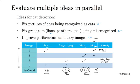So depending on how many ideas you have for improving performance on great cats or on blurry images, maybe you could pick one of the two, or if you have enough personnel on your team, maybe you can have two different teams. Have one work on improving errors on great cats, and a different team work on improving errors on blurry images.